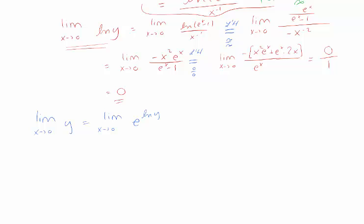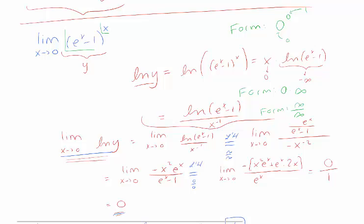Right? e and log cancel. And I know when x goes to 0 what happens to log y. When x goes to 0, log y is 0. So this whole bit looks like e to the 0, which looks like 1. So my limit is 1.